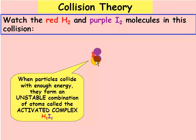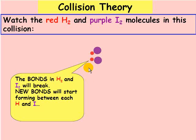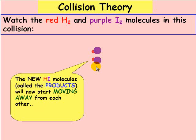If they collide with enough energy, the bonds in the H2 and the I2 will break. And then what happens is new bonds will start forming between the H's and the I's. Now what happens is the new H-I molecules, called the products, start moving away from one another.